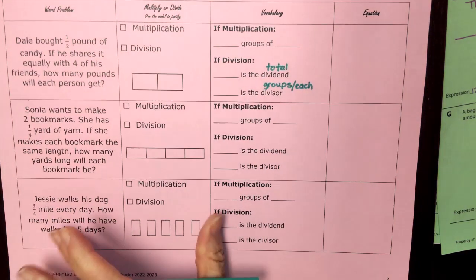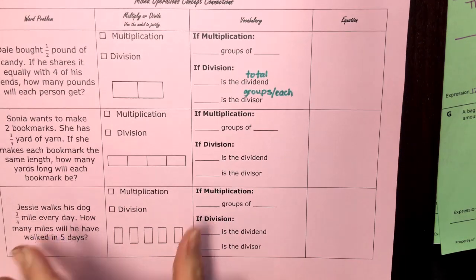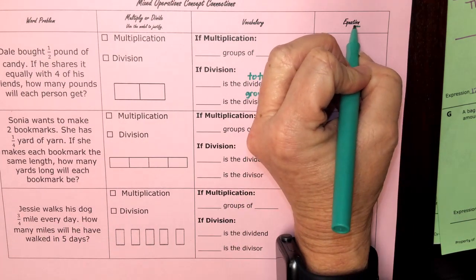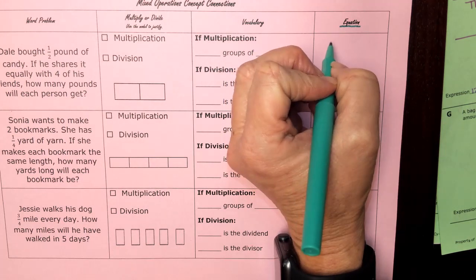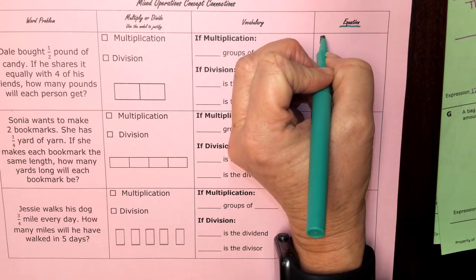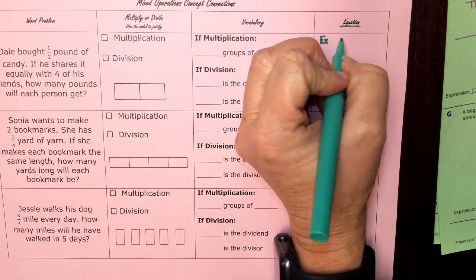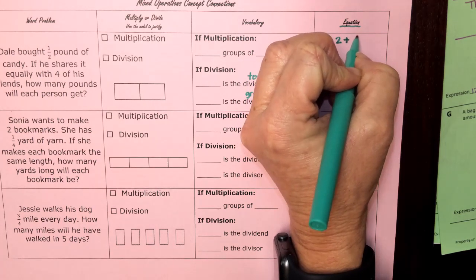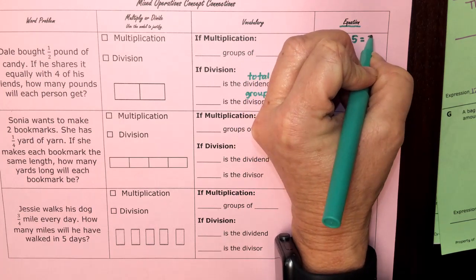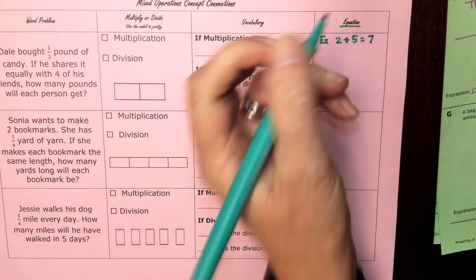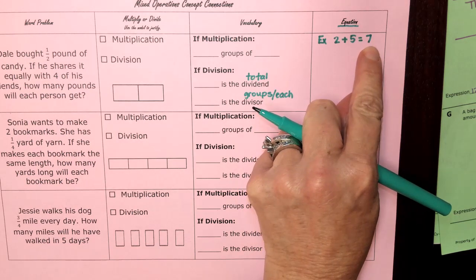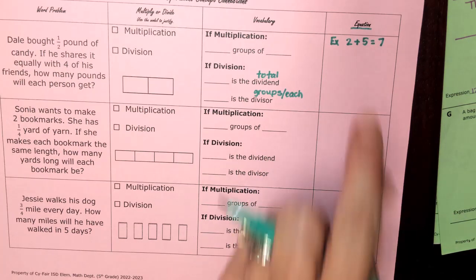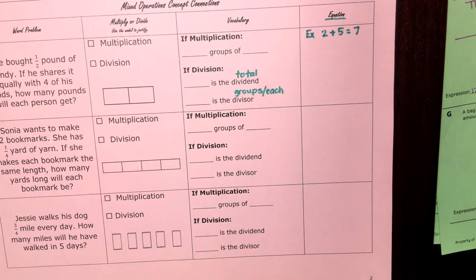Another thing to remember is the word 'equation.' An equation has an equal sign. An example of an equation would be two plus five equals seven — it's that number sentence with the equal sign and the answer. All right, let's see what you can do. I'll see you back in just a few minutes.